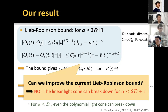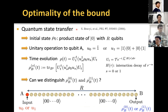The condition alpha larger than 2d plus 1 seems very restrictive, so we ask whether we can improve the current Lieb-Robinson bound. The answer is no. We can explicitly give an example where the linear light cone breaks down for alpha smaller than 2d plus 1. To discuss this, let's consider a quantum state transfer by quantum many-body dynamics, following the discussion by Bravyi et al. in their 2006 paper. We consider the all-up state in qubit systems, and aim to understand the amount of information that can be sent from qubit A to qubit B.